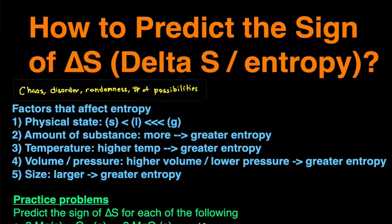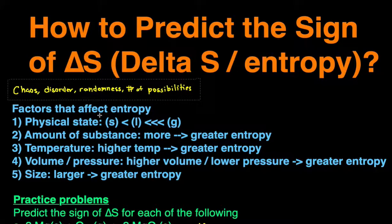Entropy is defined as either chaos, disorder, randomness, or the number of possibilities. The more chaos, the more disorder, the more random, and the more number of possibilities there are, the greater the entropy will be.